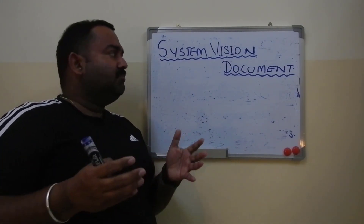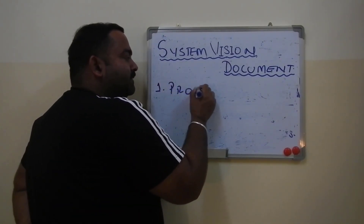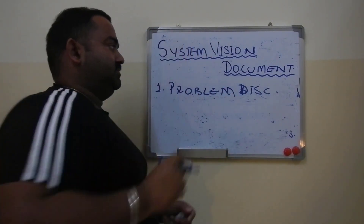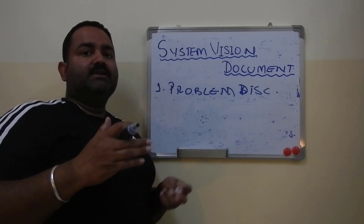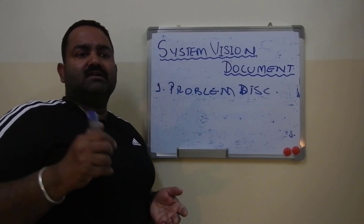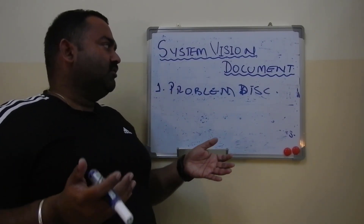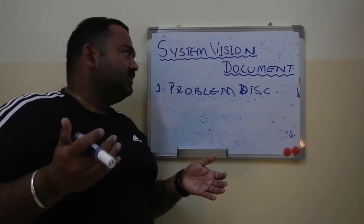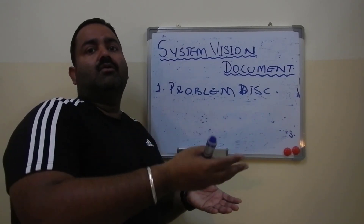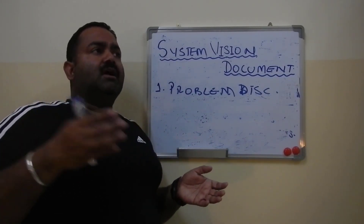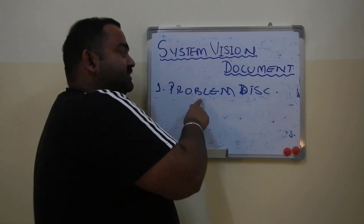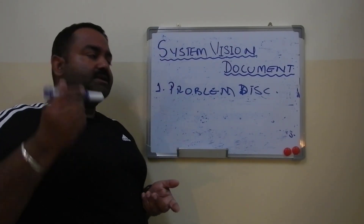The system vision document is made up of three parts. The first part is called the problem description. In this part we state the problem which our system or our business is presently facing. For example, we are recording our business transactions on paper files. The problem is that after every few years, due to moisture or due to infestation from insects, we start losing the records — insects eat the papers or moisture damages them and you cannot retrieve your records. That is the problem stated in the first part.